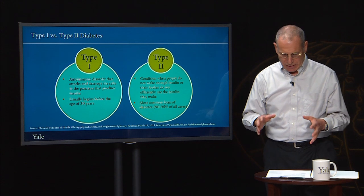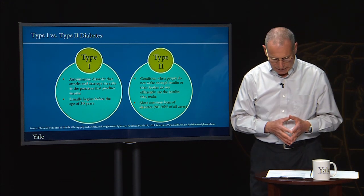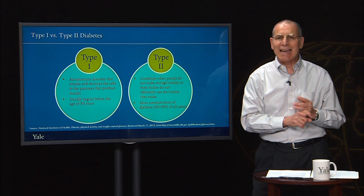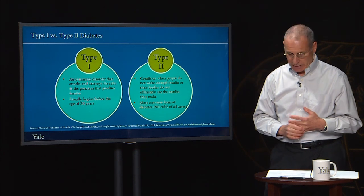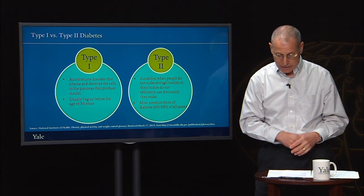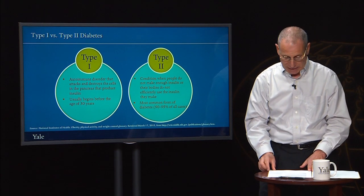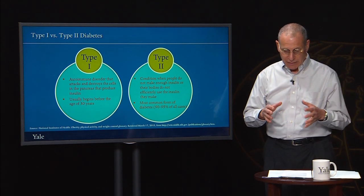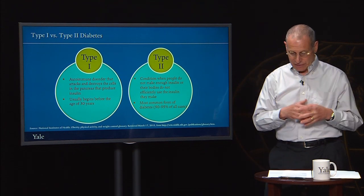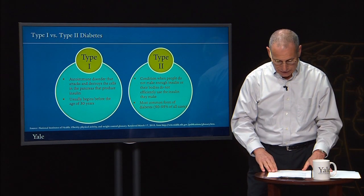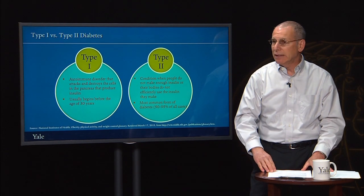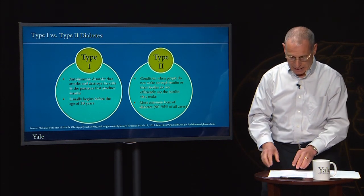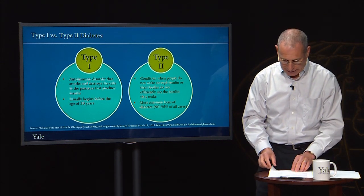Diabetes was the ninth leading cause of death in 2010. It was the eighth leading cause of death in high-income countries and the tenth leading cause of death in low- and middle-income countries. It was also the eighth leading cause of death globally in 2010, but the sixteenth leading cause of death in low- and middle-income countries.